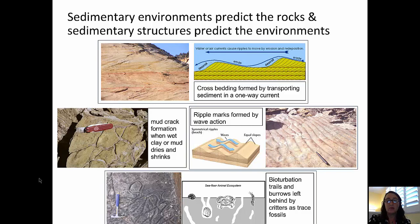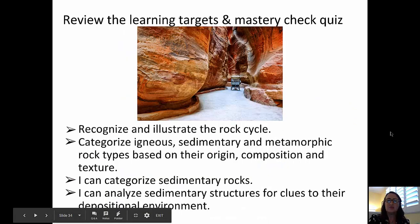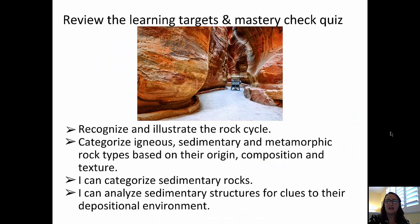Finally at the bottom, we see examples of bioturbation — trace fossils left behind as critters have crawled across, leaving trails, or dug through sediment, leaving their burrows. We're now ready to go back and check on the learning targets and take the mastery check quiz. Our learning targets were: recognizing the position of sedimentary rocks in the rock cycle, categorizing sedimentary rocks, and analyzing sedimentary rock structures for clues to their depositional environments.